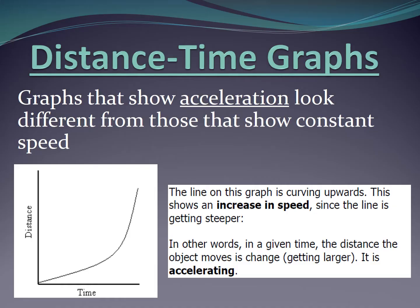Graphs that show acceleration look different. They're not going to have a straight line. Why? Because acceleration is a rate. When you're accelerating, you're going from zero and slowly or assuredly increasing your speed. This is what is shown here. At first, it's very low, and then all of a sudden, you have a quick rise in distance covered in that time.